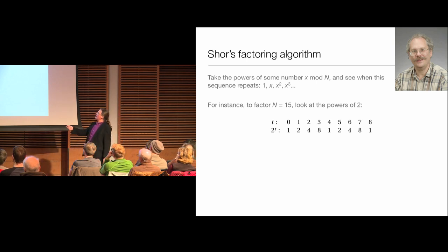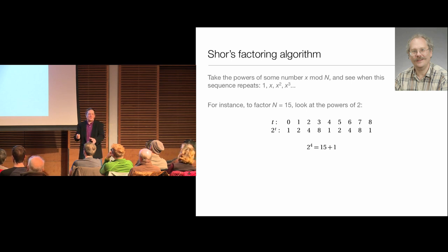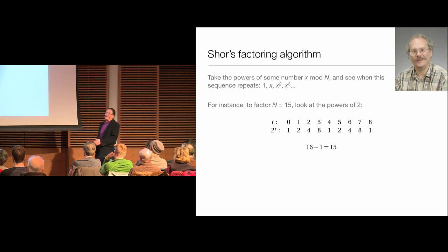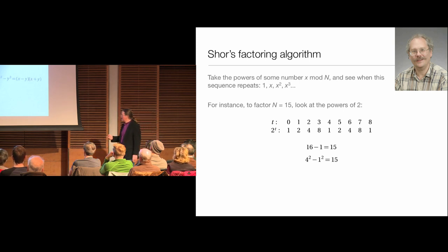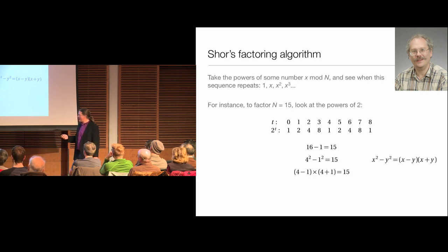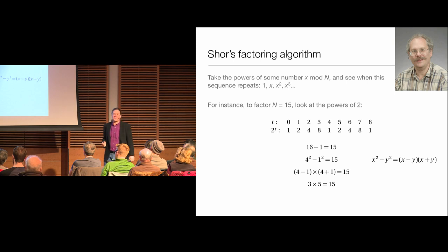What does that periodicity mean? It means the fourth power of 2 is some multiple of 15 plus 1. Subtracting 1 from both sides: 16 minus 1 is some multiple of 15. Now 16 is the square of 4, and 1 is the square of 1, so we can apply the difference of two squares: x-squared minus y-squared equals x minus y times x plus y. So we factor this as (4 minus 1) times (4 plus 1), which is 3 times 5 — and we've factored 15. This algorithm has already been carried out in the laboratory with a quantum computer that has 4 bits of memory.